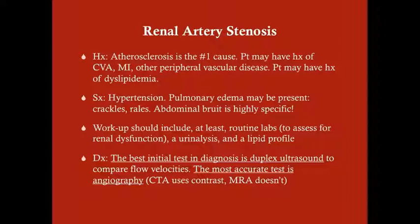For the workup of any patient with hypertension possibly due to RAS, get routine labs to assess for renal dysfunction, a urinalysis to assess for glomerulonephritis, and a lipid profile. When you suspect renal artery stenosis, the best initial test is a duplex ultrasound — comparing flow velocities. The most accurate test, and the one obtained before surgery, is angiography. CTA angiography uses contrast whereas MR angiography does not, so if the patient has poor renal function you may want to avoid CTA angiography.